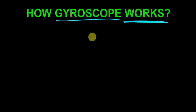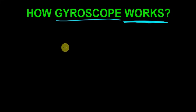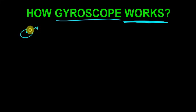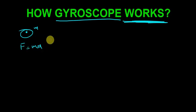Before starting this video, you should be familiar with Newton's laws of motion, what is a torque, and what is a force. A gyroscope obeys Newton's laws — F equals ma — and the first, second, and third laws are essentially embedded in this formula.